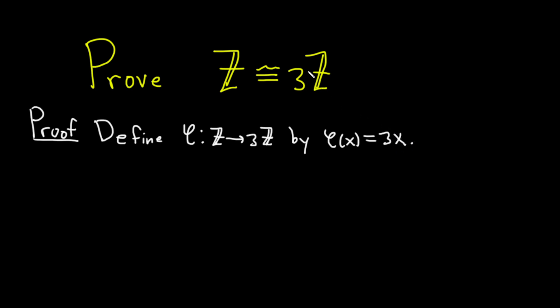Note 3x is an element of the set. This is the set of all multiples of three, so everything is good here. We have a function. Let's show that it's a group homomorphism.